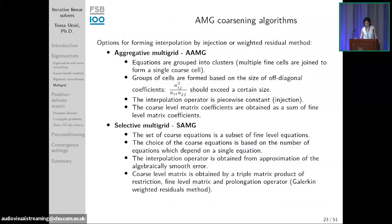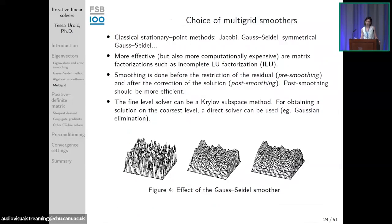Regarding the choice of smoothers: beyond Gauss-Seidel and Jacobi, incomplete LU (ILU) factorization also has smoothing properties. For block matrices combining different types of equations in a single linear system, ILU factorization as the smoother works better — it converges where Gauss-Seidel does not.